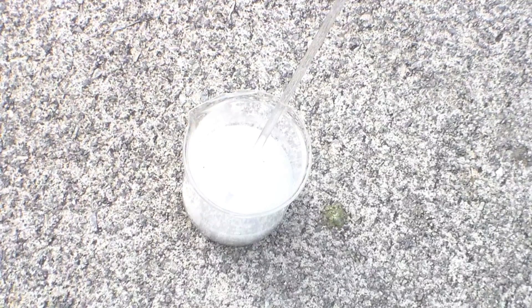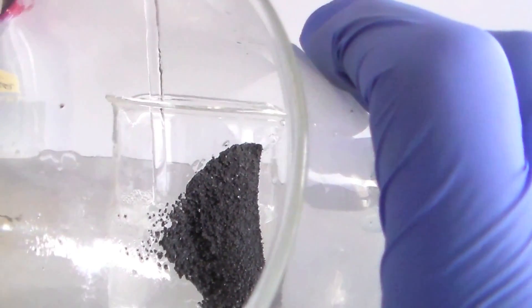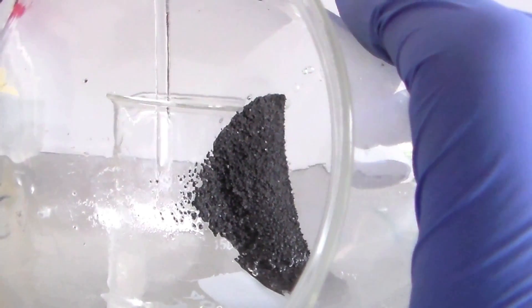However, on the bottom of the beaker is a dark black insoluble powder, which is a pretty good indication that we have actual silicon.